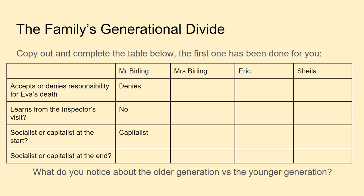We're going to look at different things — it's just a one-word answer for this, it doesn't need to be super detailed. Copy out and complete the table: whether or not they accept responsibility for Eva's death, do they learn from the Inspector's visit, are they socialists or capitalists at the start, and socialists or capitalists at the end? I've started completing it for Mr Birling — finish that off and then complete the sections for Mrs Birling, Eric, and Sheila. Then see if you notice anything in particular about the older generation versus the younger generation. Pause the video, copy down, and complete the table.